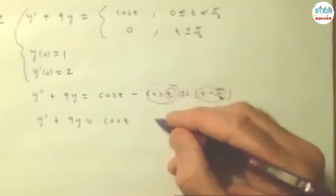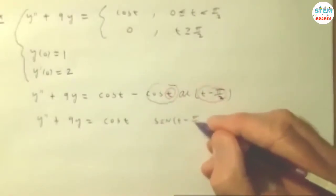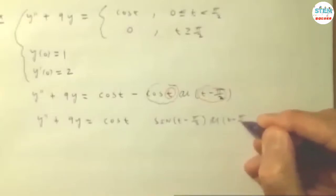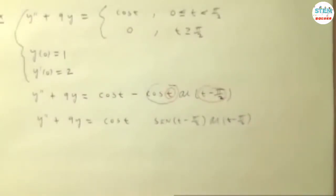So we have Y double prime plus 9y is equal to cosine of t. Now a shift of pi over 2 is always going to turn this into its co-function. So the cosine is sine.